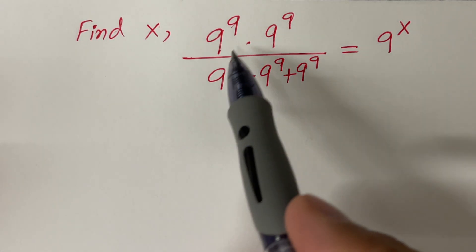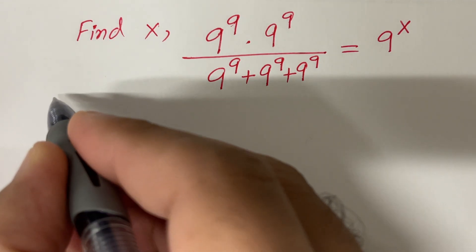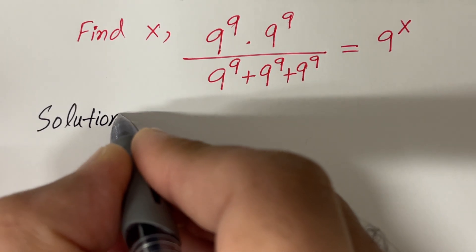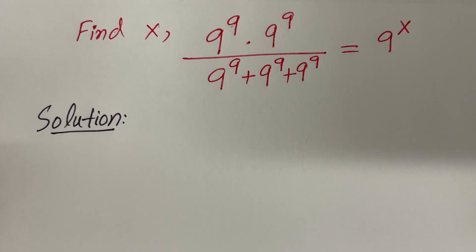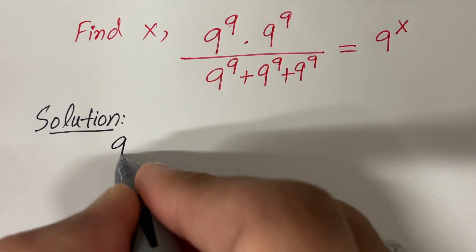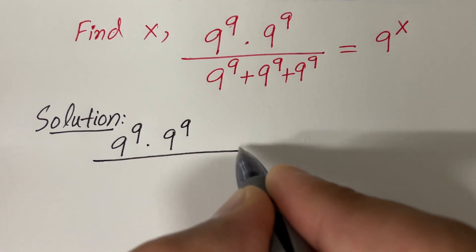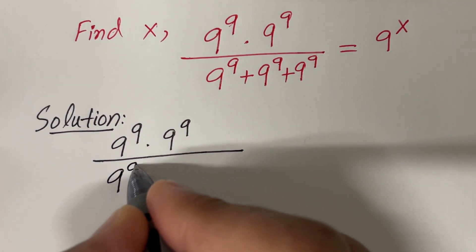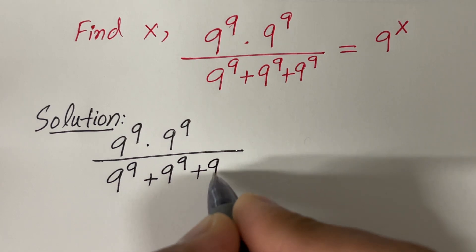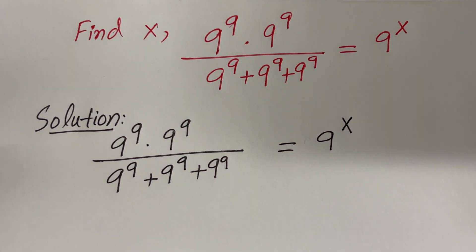In this video, we are given this nice equation and we want to find the value of x. Let's rewrite the given equation: 9 raised to the power 9 times 9 raised to the power 9, divided by 9 raised to the power 9 plus 9 raised to the power 9 plus 9 raised to the power 9, is equal to 9 raised to the power x.